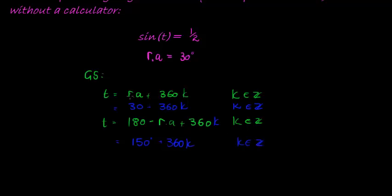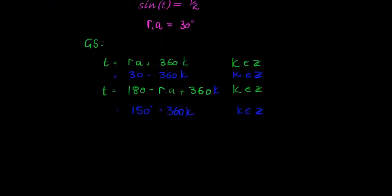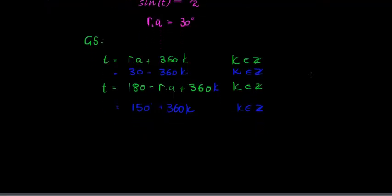Now that we have the two general solutions, they are actually just formulas to find the specific solutions with. So now what we're going to do is we're going to start with k. I always start with k equal to 0, then 1, then 2, until I fall outside of my interval, and then I go negative 1, negative 2, until I fall outside of my interval. And do the same for the second solution.